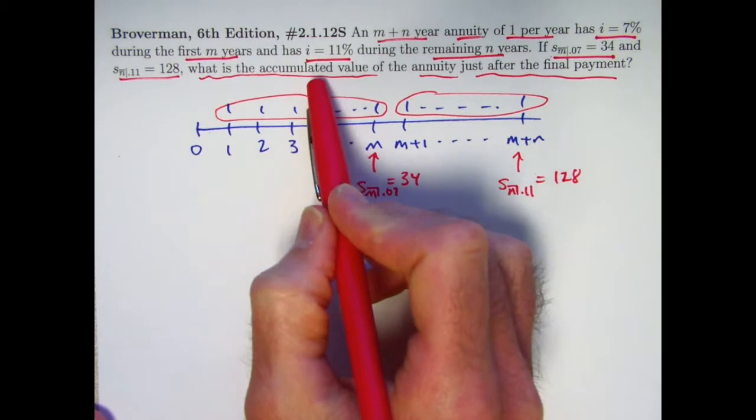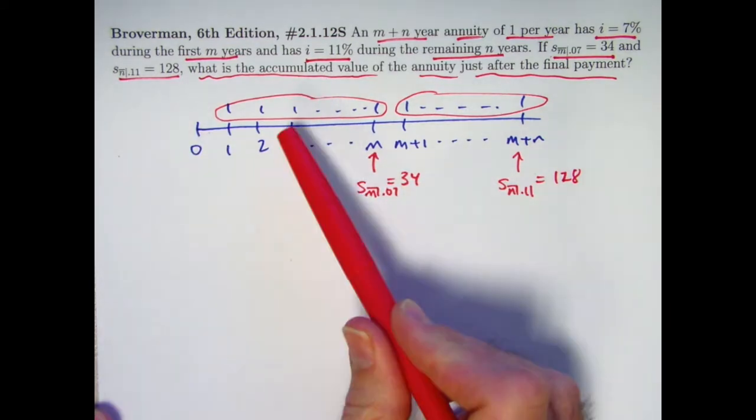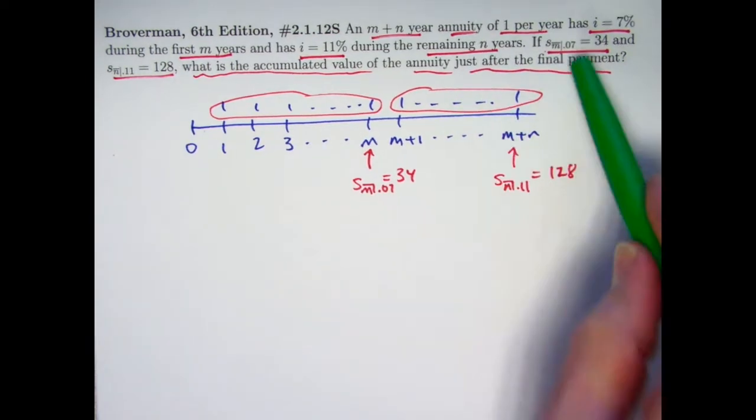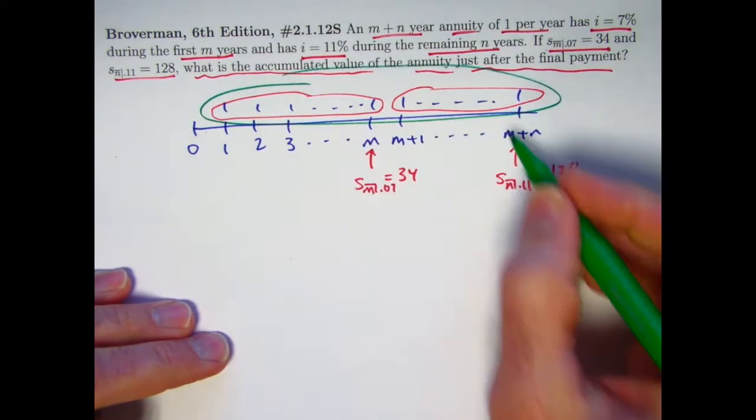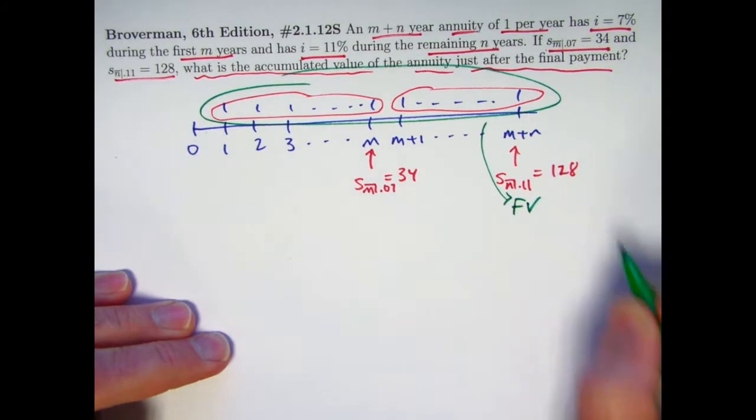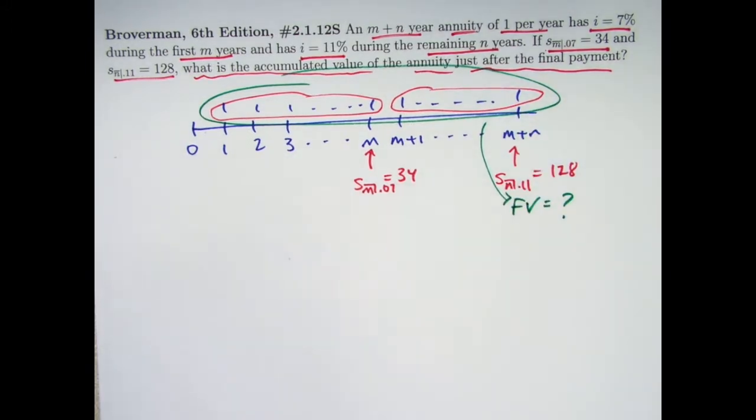The problem says now find the accumulated value of all the money amounts, the M plus N payments, just after the final payment at time M plus N. So all together we want to find the future value, I'll just label it FV, of all M plus N payments at time M plus N.